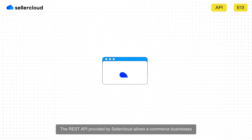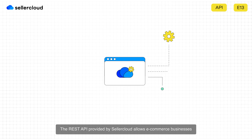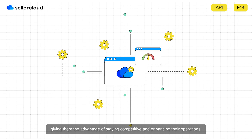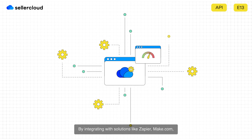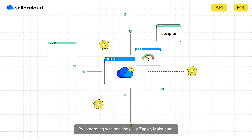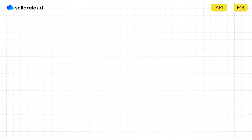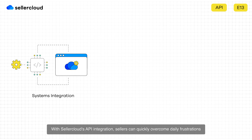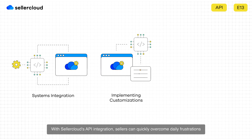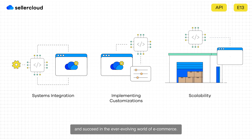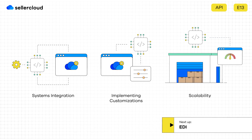The REST API provided by SellerCloud allows e-commerce businesses to easily connect with various third-party apps, giving them the advantage of staying competitive and enhancing their operations. By integrating with solutions like Zapier, Make.com, or Pipedream, e-commerce businesses can efficiently scale and grow. With SellerCloud's API integration, sellers can quickly overcome daily frustrations and succeed in the ever-evolving world of e-commerce.